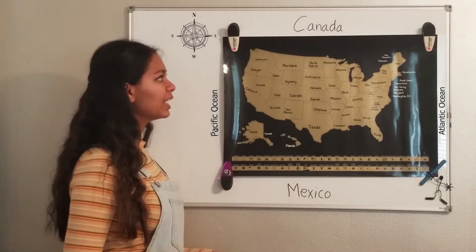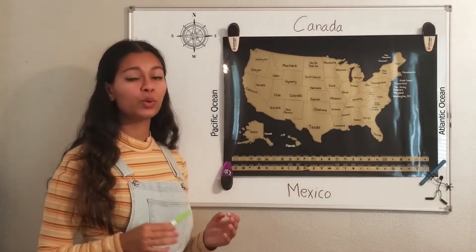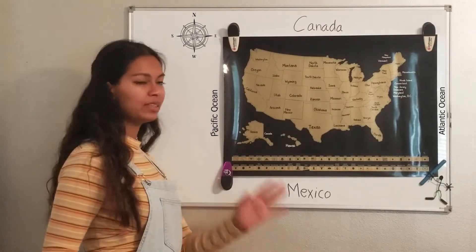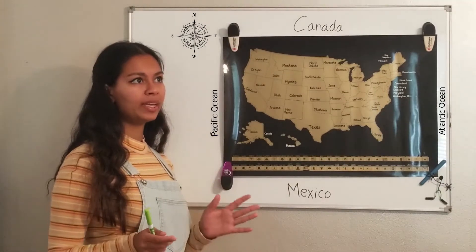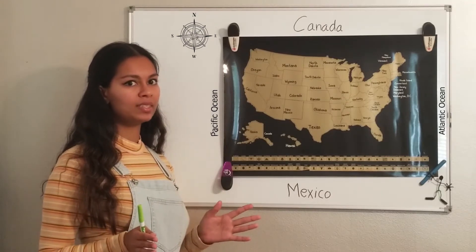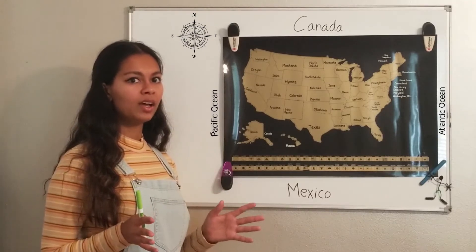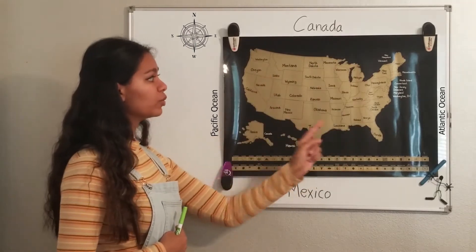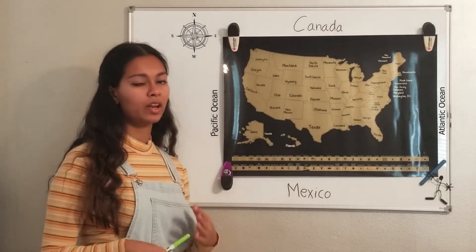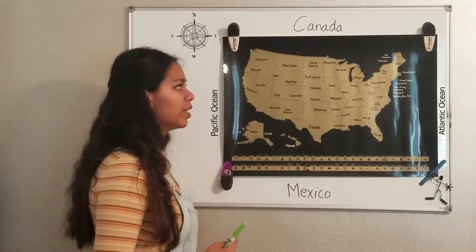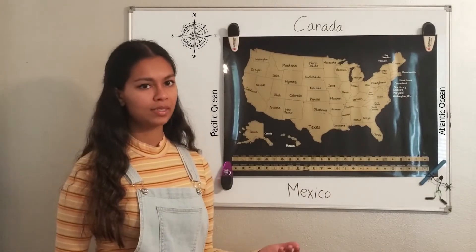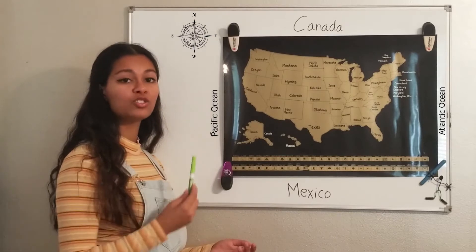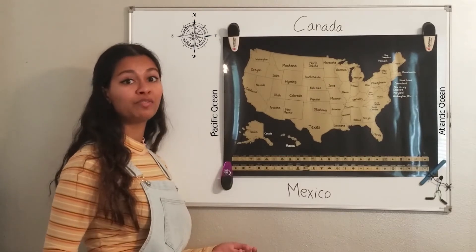The next question asks what the 13 original colonies were. This was pre-Declaration of Independence, pre-Revolutionary era, when these states on the east coast were still colonies that had not yet become states. They then became the 13 original states, and this is what the 13 stripes on the American flag represent.